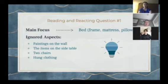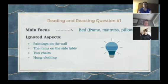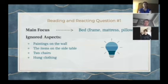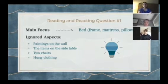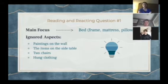For reading and reaction question number one, Flanders' main focus of the poem was Van Gogh's bed. She describes the color, the narrow frame, the mattress, and details about how they were built and beaten. Flanders also describes the scene of the room and how the sunlight fills the lonely room. In contrast, Flanders ignores certain aspects of the painting, such as the portraits on the walls, the items on the side table, the two out-of-place chairs, and the hung-up clothing. This leaves the reader wondering the significance of these items and why they were ignored.